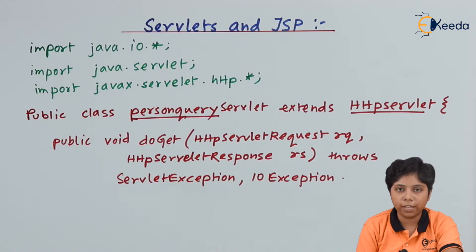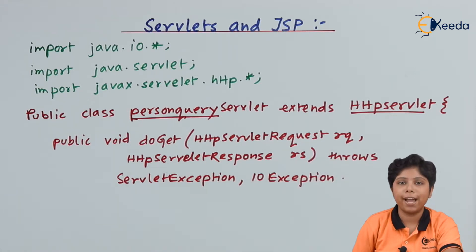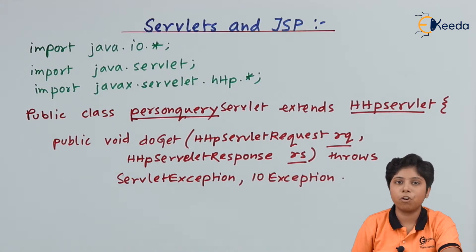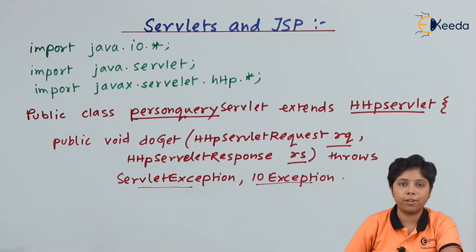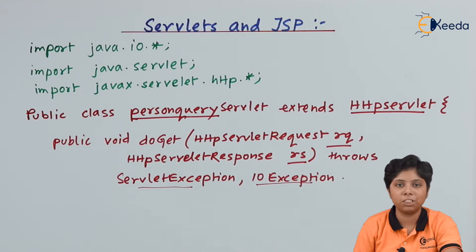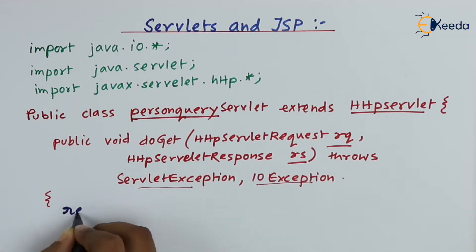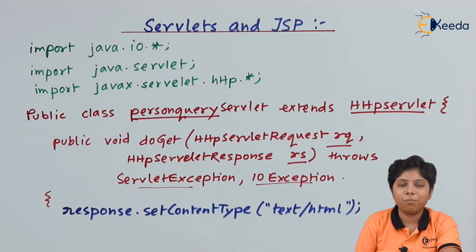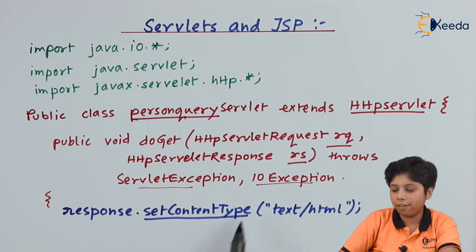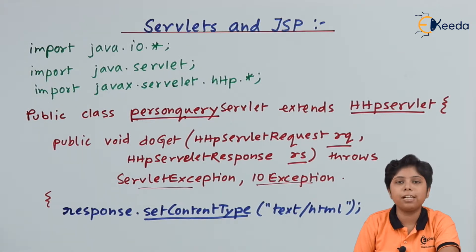I am using a doGet function that will fetch the request (rq) and response (rs) for the servlet. I am using the keywords rq and rs as variables for the request and response from HttpServlet. It throws two exceptions: a ServletException, for any problem while connecting to the server or application, and an IOException for handling input/output exceptions. I am using the response to call setContentType, setting the content type to text/html.